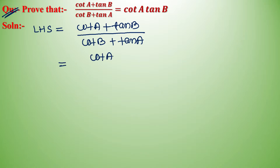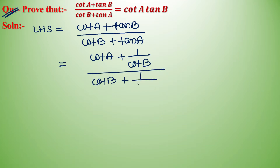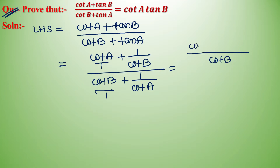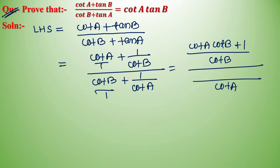Substituting tan B = 1/cot B and tan A = 1/cot A: this becomes (cot A + 1/cot B) / (cot B + 1/cot A), which gives (cot A · cot B + 1) / cot B in the numerator, and (cot A · cot B + 1) / cot A in the denominator.